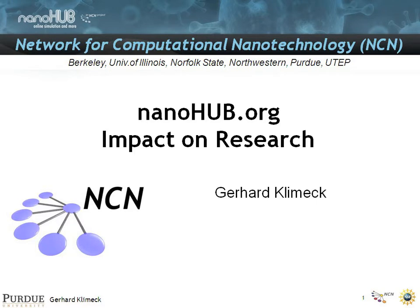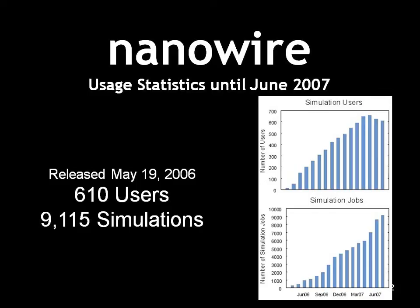So how can NanoHub be useful for research? How can it have impact? Let me pull up a sort of personalized example. In May of 2006 we deployed a code called Nanowire. You see a usage statistic up to a year later in June of 2007, where the number of aggregate simulation users have increased significantly and some 9000 simulations have been run by some 600 users.